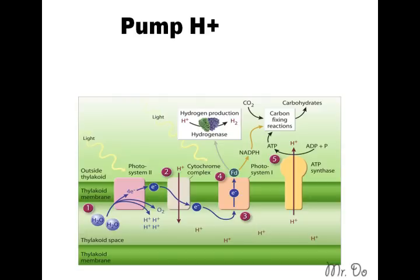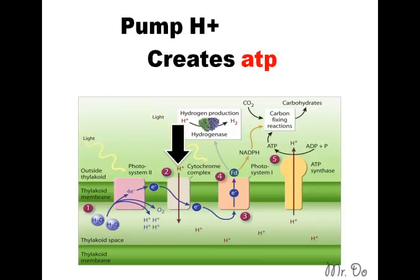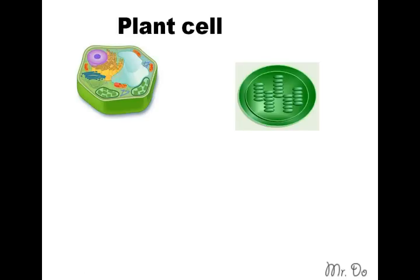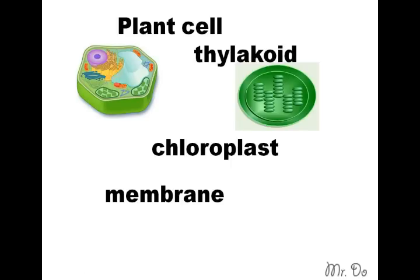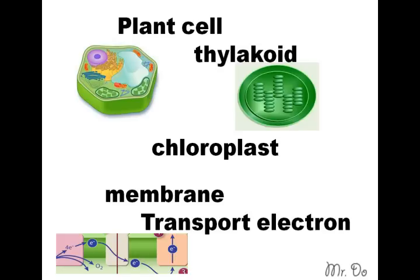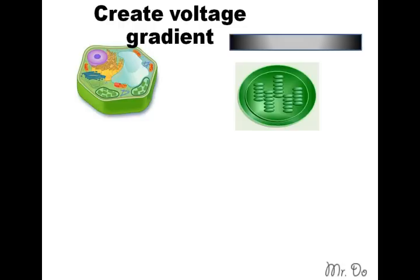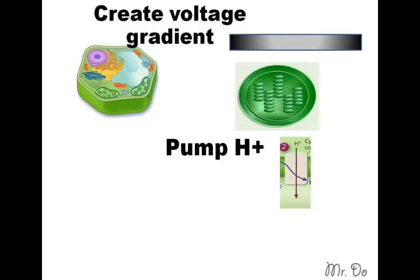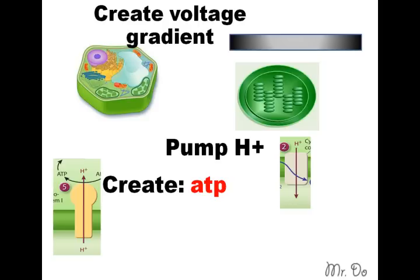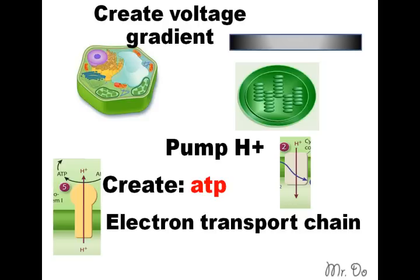Creating a voltage gradient pumps the hydrogen into the thylakoid. Pumping hydrogen in will eventually build enough hydrogen to pump back out to create ATP. So: plant cell, chloroplast. Chloroplast has thylakoid, and everything happens first in the membrane — transport of electrons, then creates a voltage gradient, which pumps the hydrogen in, which creates ATP. And that's the electron transport chain.